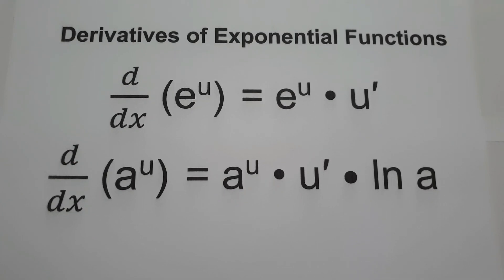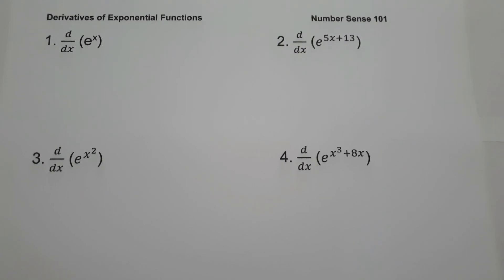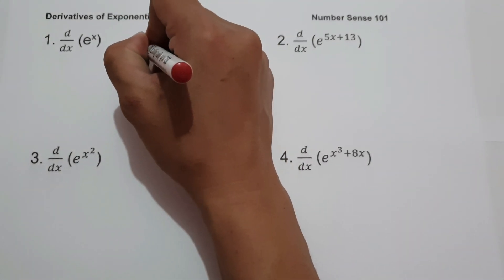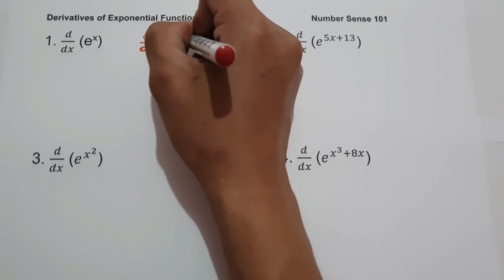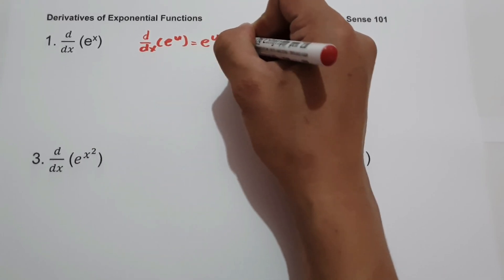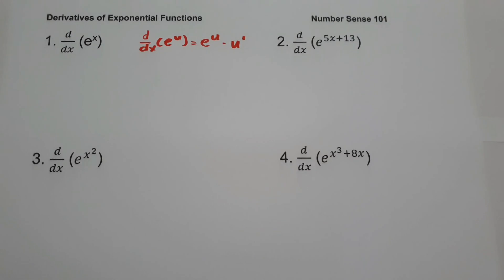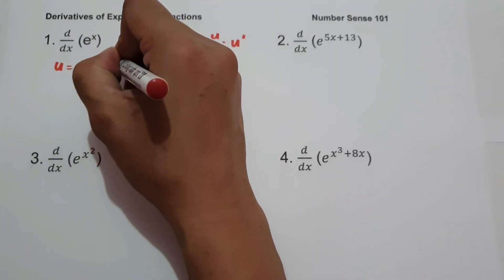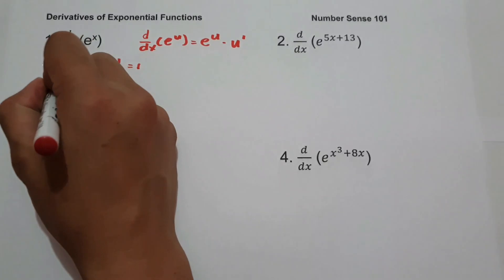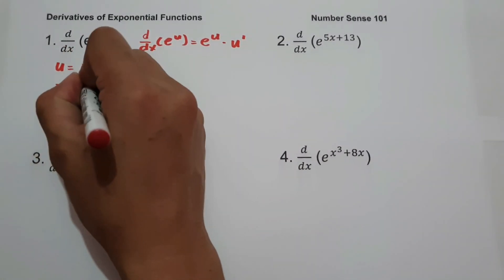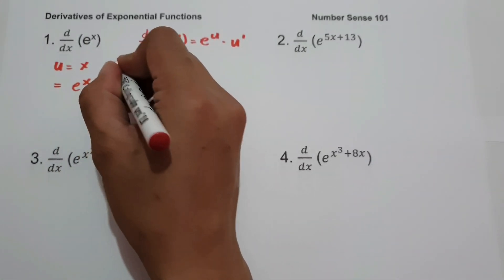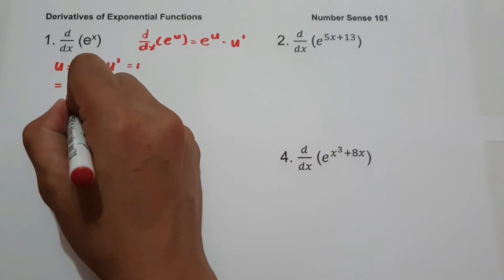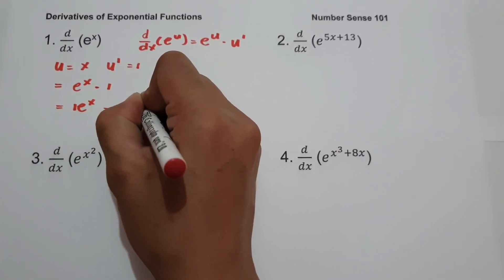Let's start with the first set of examples. We are going to find the derivative of exponential functions using the formula: derivative of e raised to u equals e raised to u multiplied by u prime. For number 1, what is the derivative of e raised to x? The value of u is x, and u prime, the derivative of x, is 1. So the derivative of e raised to x is e raised to x multiplied by 1, which gives us e raised to x.